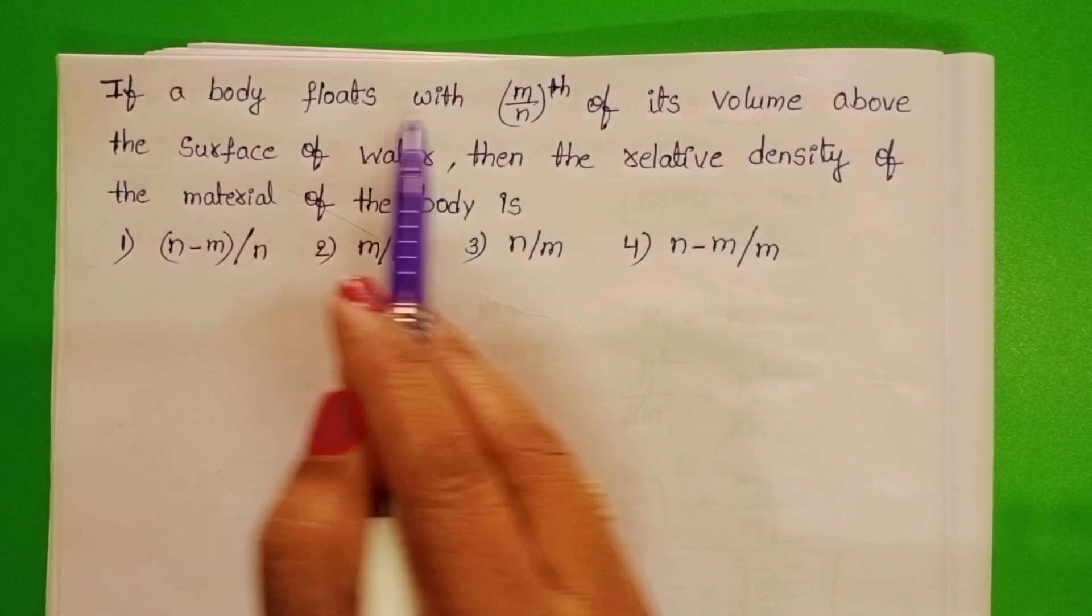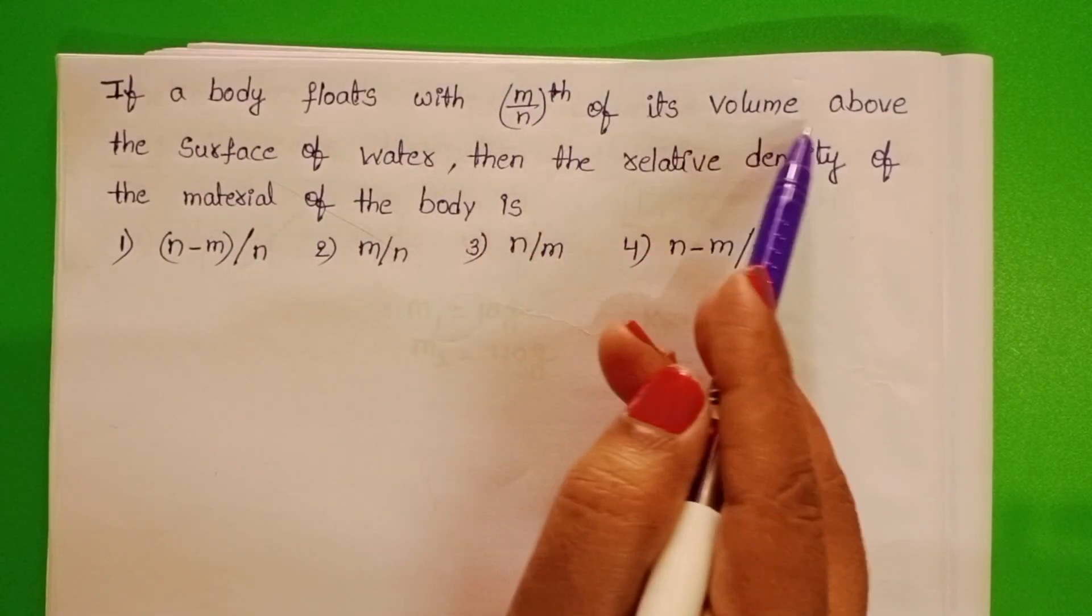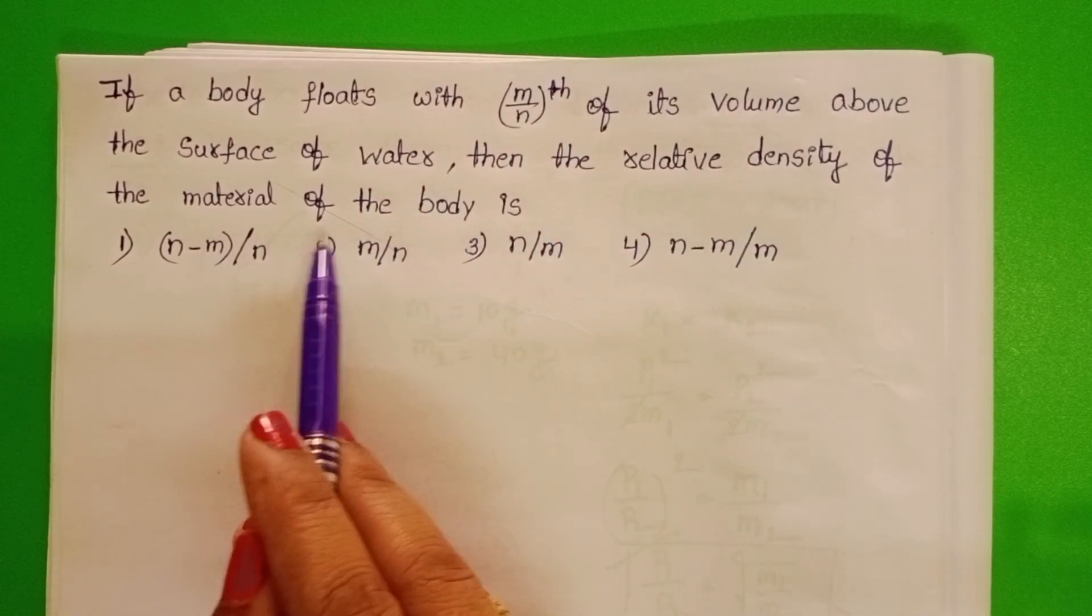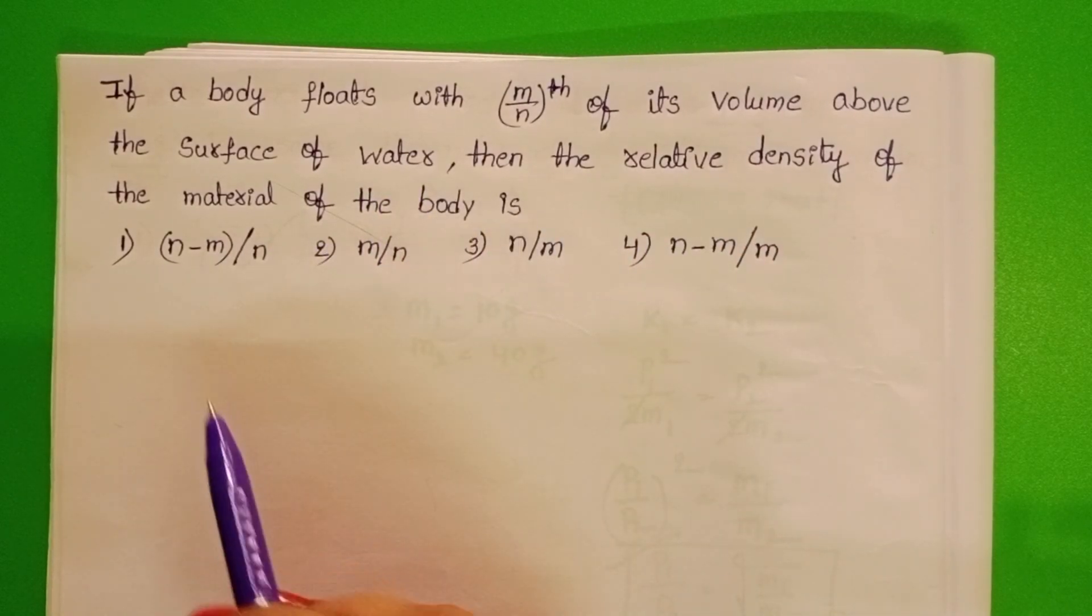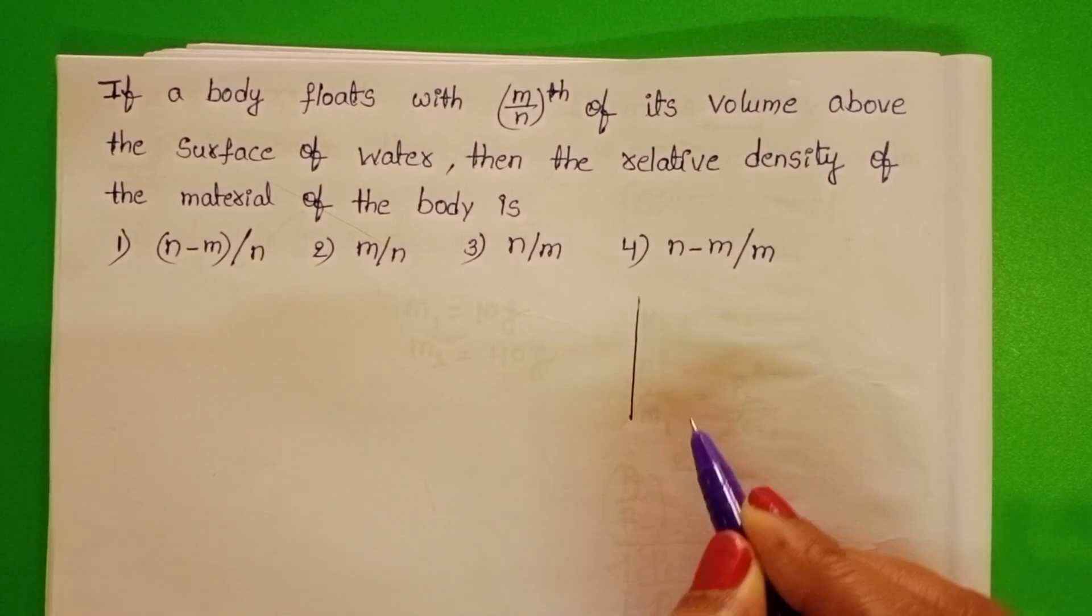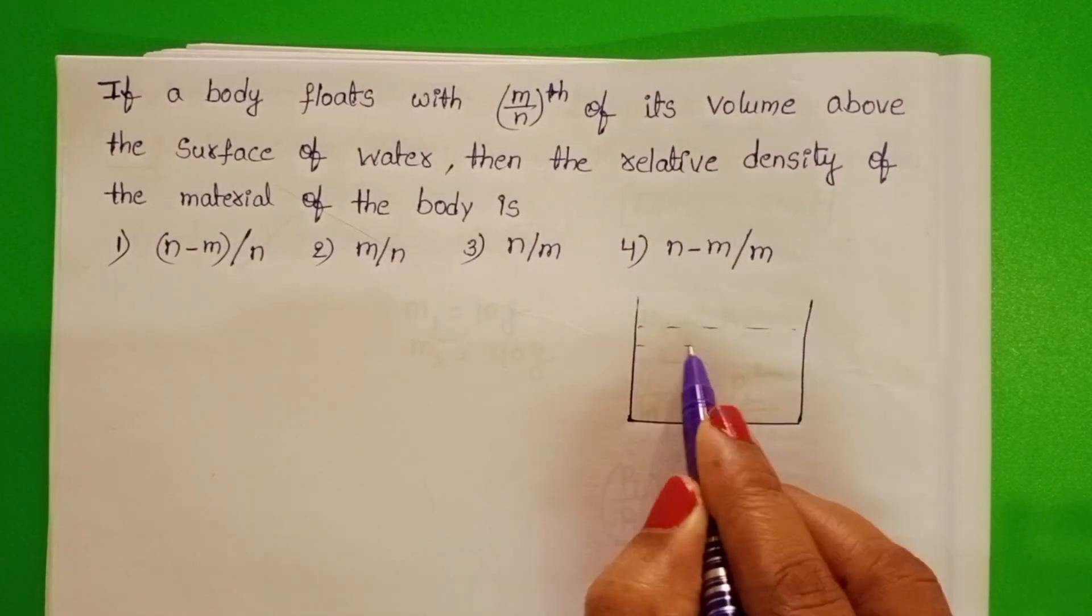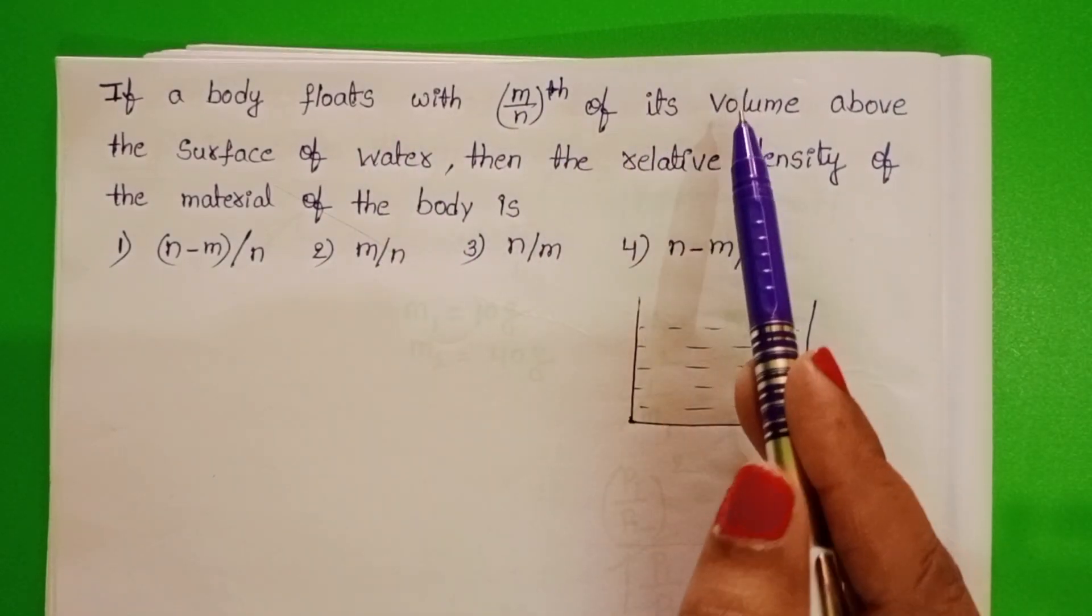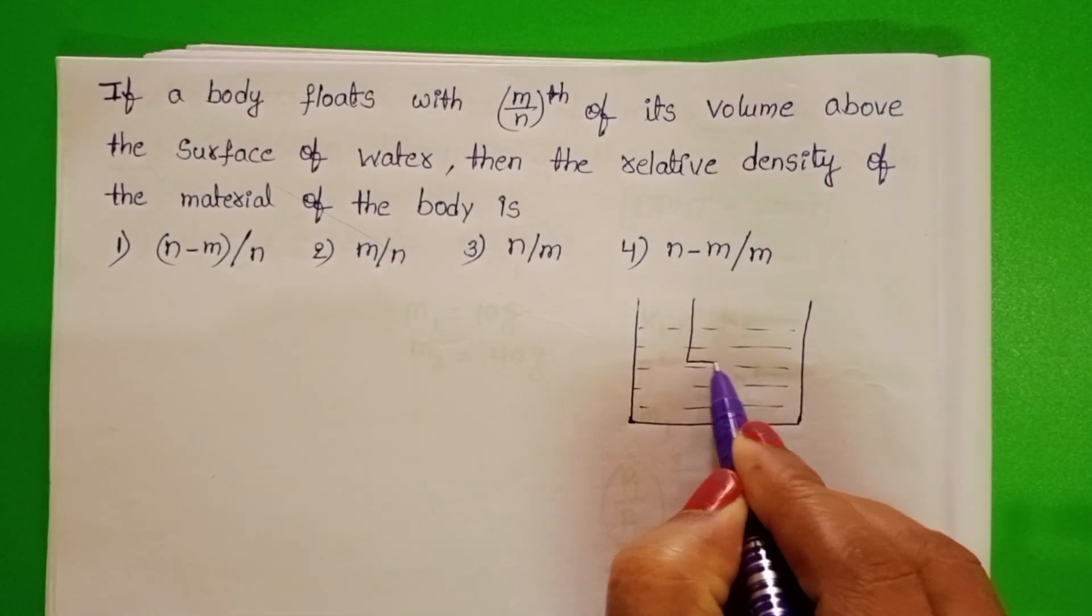If a body floats with m by nth of its volume above the surface of water, then the relative density of the material of the body is. In the given question, m by nth volume of the body floats on the surface of the water.